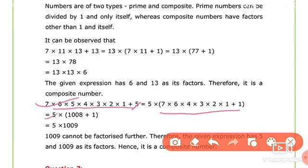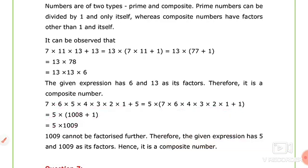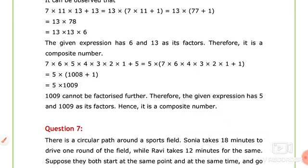5 remains as it is. In all this multiplication, you will get 1008 + 1, which is 1009. So the given number has 2 factors: 5 and 1009. That means it cannot be a prime number. Definitely, it has to be a composite number.